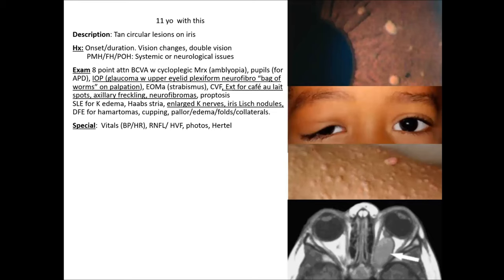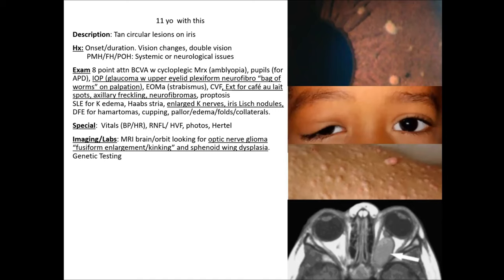For special testing in clinic: check blood pressure because NF1 patients may have kidney issues affecting blood pressure. Do RNFL if there's glaucoma, and Hertel exophthalmometry if there's proptosis. For imaging, you're looking for optic nerve gliomas with fusiform enlargement and kinking, and sphenoid wing dysplasia. Genetic testing looks for the NF1 mutation.